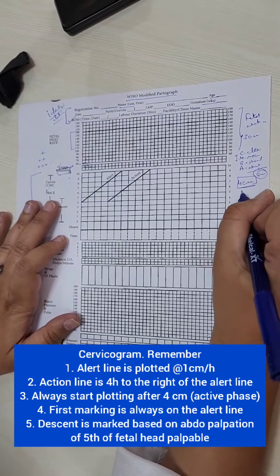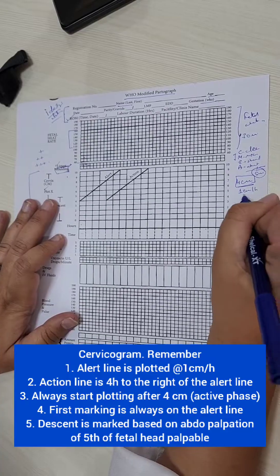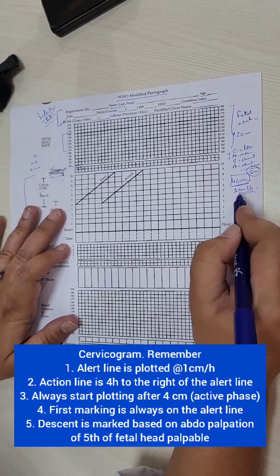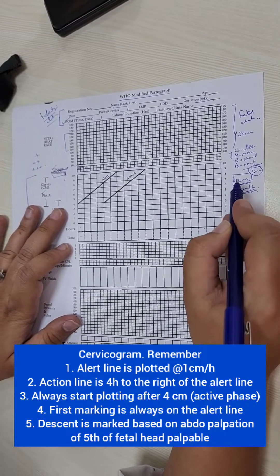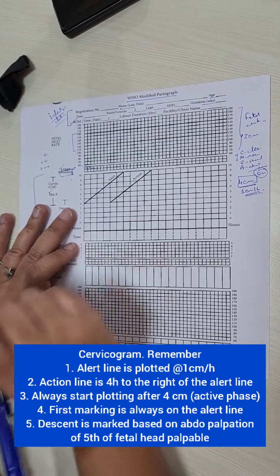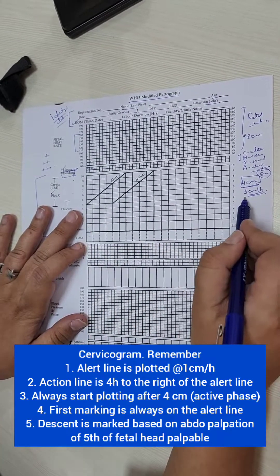And a woman is expected to dilate at the rate of 1 centimeter per hour. A primigravida and multigravida progress faster. So if we take 1 centimeter per hour and she comes at 4 centimeters, this line, the alert line is plotted accordingly, according to this rate of dilatation.